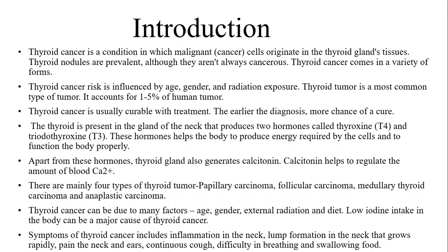Thyroid tumor is the most common type of tumor, accounting for 1–5% of human tumors. The thyroid is a gland in the neck that produces two hormones called thyroxine and triiodothyronine, T4 and T3. These hormones help the body produce energy required by the cells and function the body properly. Apart from these hormones, the thyroid gland also produces calcitonin, which helps regulate the amount of calcium in the blood.